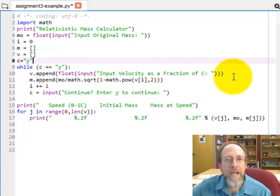And it's going to go ahead and ask for the velocity as a fraction of c, so it should be a fraction like 0.9, 0.8, 0.7. And it's going to take that value from the user, convert it to a float, and then append it to the array v.